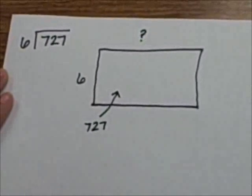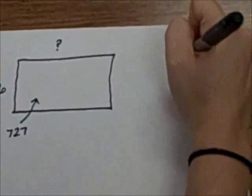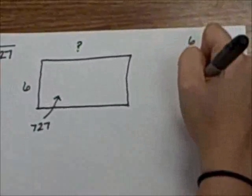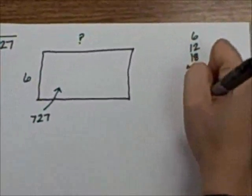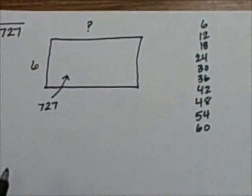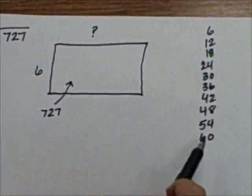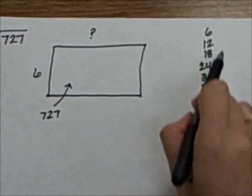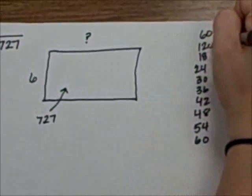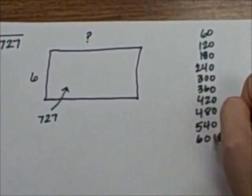To help guide me with my problem, I'm going to write my 6s out to the side. Now I want to get to 727 inside of my box, but the biggest number I have is 60. However, if I add zeros on the end of each of these numbers, this will help get me one step closer.